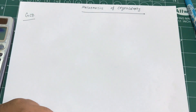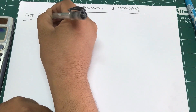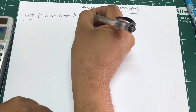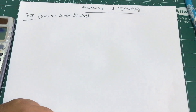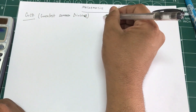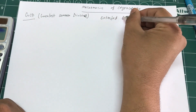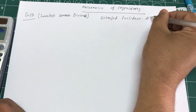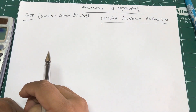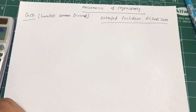GCD is a very common mathematical tool used in cryptography — it stands for Greatest Common Divisor. Based on GCD we can find if two numbers are co-prime or not. For this we use something called the Euclidean algorithm, or specifically the Extended Euclidean algorithm.